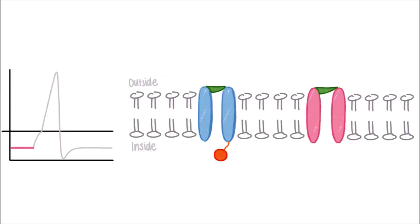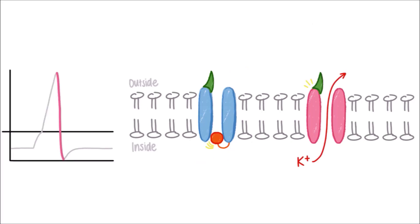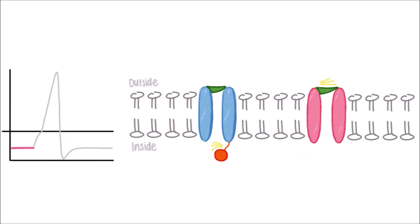Now let's look at the whole process altogether. At resting state, both activation gates are closed. Sodium activation gates quickly open in rising phase, and sodium ions flow into the cell. At falling phase, the sodium inactivation gates close while the potassium activation gates open, stopping sodium ions from flowing in while allowing potassium ions to flow out. During and after hyperpolarization, the sodium activation gates start to close as well. The closing of potassium activation gates and reopening of the sodium inactivation gates brings us back to resting state.